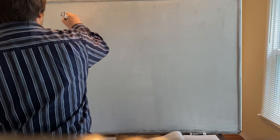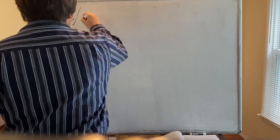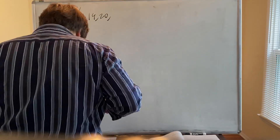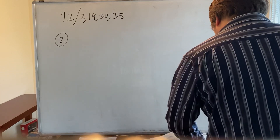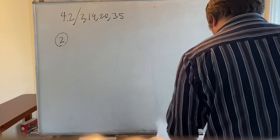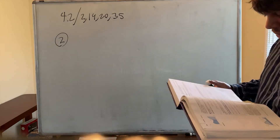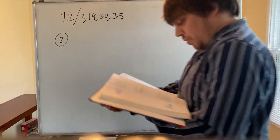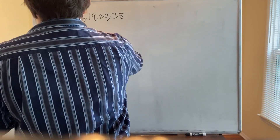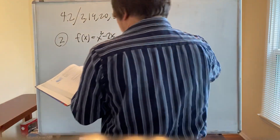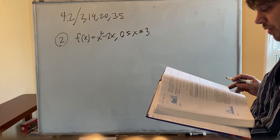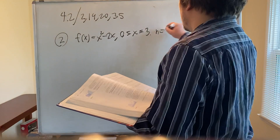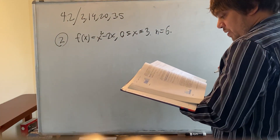Next is section 4.2, problems 2, 14, 20, and 35. For number 2 in 4.2: if f(x) = x² - 2x on 0 ≤ x ≤ 3, evaluate the Riemann sum with n = 6 using right endpoints.